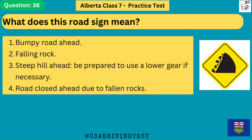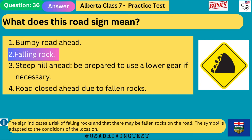What does this road sign mean? 1. Bumpy road ahead. 2. Falling rock. 3. Steep hill ahead, be prepared to use a lower gear if necessary. 4. Road closed ahead due to fallen rocks. The answer is 2: falling rock. The sign indicates a risk of falling rocks and that there may be fallen rocks on the road. The symbol is adapted to the conditions of the location.